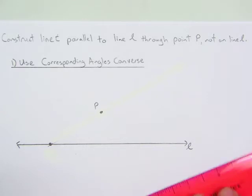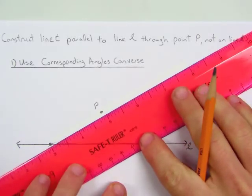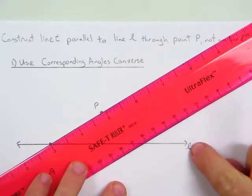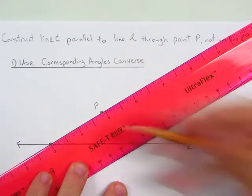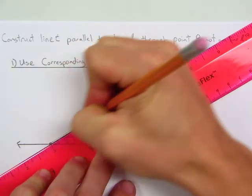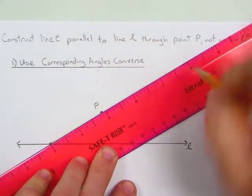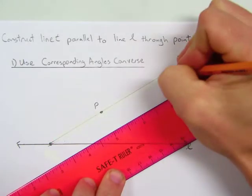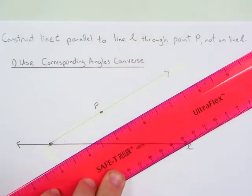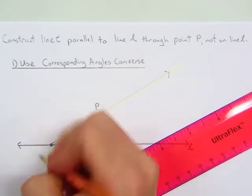So the very first thing you need to do is draw a ray from a point on line L through point P. We'll go ahead and label this point A.